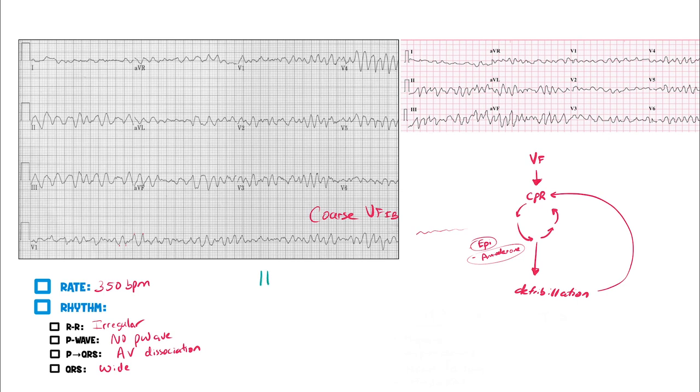The ACLS algorithm says be thinking about your H's and your T's. In other words, think about the causes. What could be the reason why this person is in V-fib?